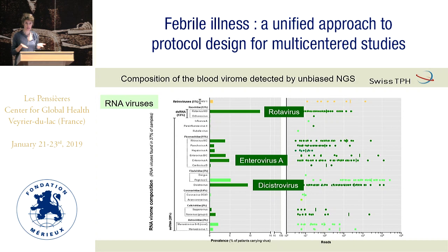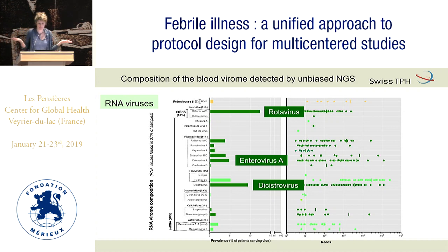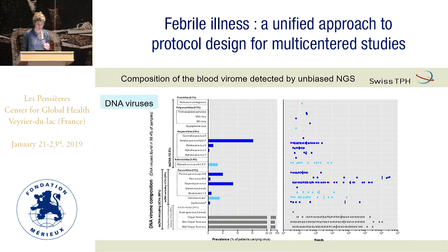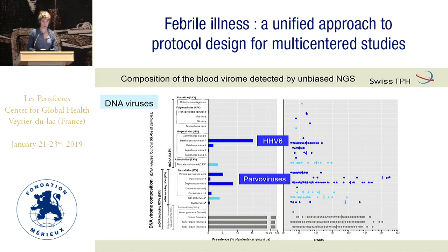We have to look now at other cohorts to test whether this will be the new Zika. Enterovirus A is a common virus that causes fever. For DNA viruses, the most important were HHV-6 and parvovirus. Some viruses shown in gray infect 100% of children and are probably not pathogenic. The others could be the cause of fever, but HHV-6, like many herpesviruses, persists in the blood for weeks or months after acute infection — so some children have an old infection and some an acute one.